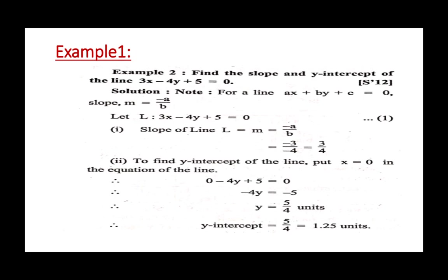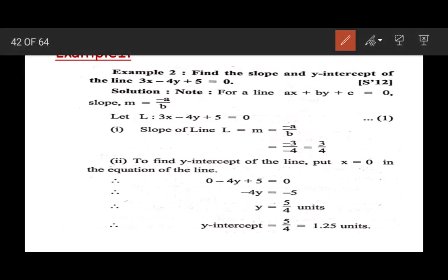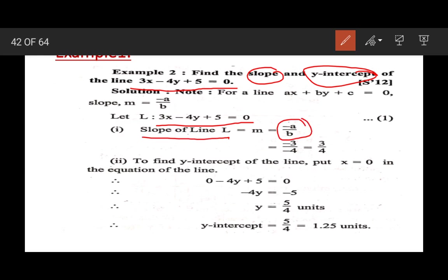The first example is: find the slope and y-intercept of the line 3x minus 4y plus 5 equal to 0. Here, the equation of a line is given and we have to find the slope and y-intercept. We can easily find the slope of a line by using the formula m equals minus a upon b.